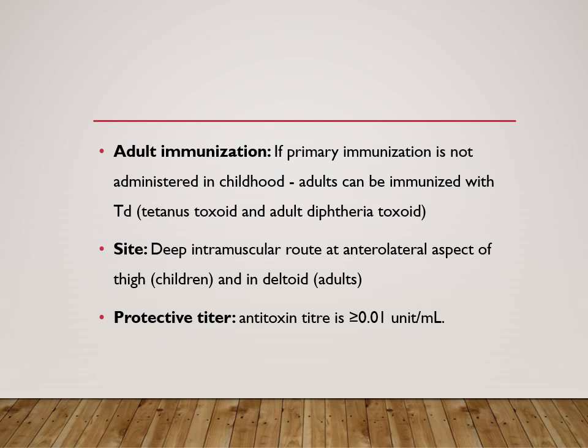For adult immunization, if primary immunization has not been given, they can be immunized with the full dose of tetanus toxoid and adult diphtheria toxoid (Td). It is given by deep intramuscular route. For children, the anterolateral aspect of the thigh is used; for adults, the deltoid. The protective titer, if checked, should be more than 0.01 units per ml.